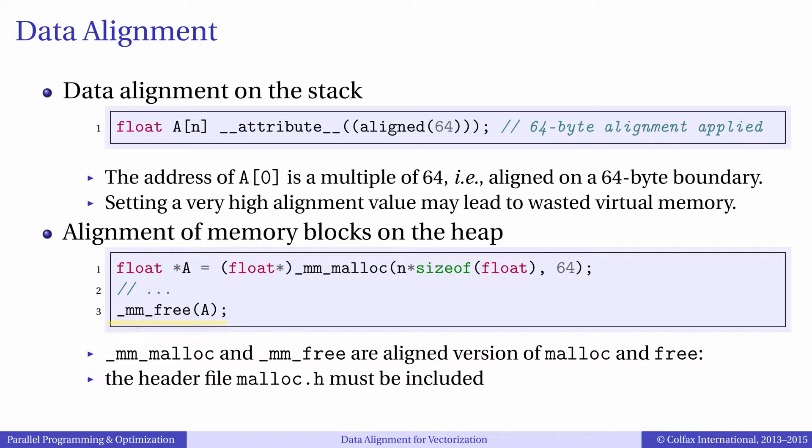Even though alignment is useful for vectorization, it doesn't mean that you need to try to align every variable in your program. For instance, scalars can live happily at memory addresses that have natural alignment, which is when alignment value is equal to the data size.